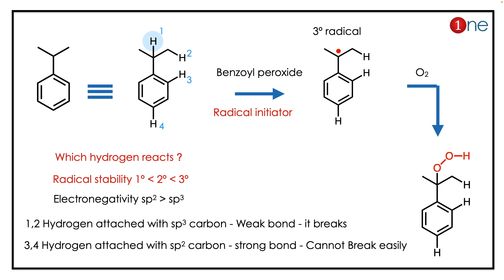There are many possibilities. The hybridization and radical stability decide the reaction. The hybridization here is sp2 and sp3. sp2 is more electronegative, so hydrogen removal is not easy — so options three and four are not possible. Only one and two remain. If you remove hydrogen in one and two, you form a radical; the first hydrogen gives a tertiary radical, which is the major product.